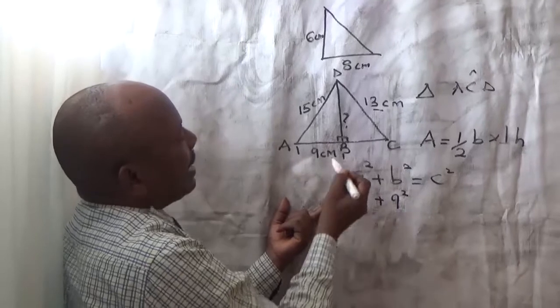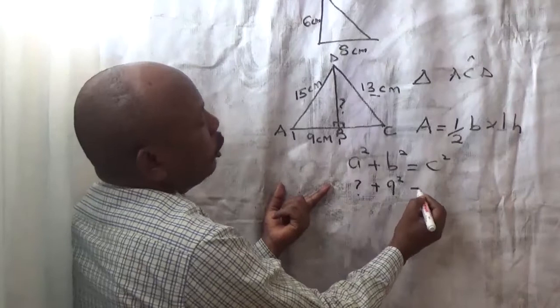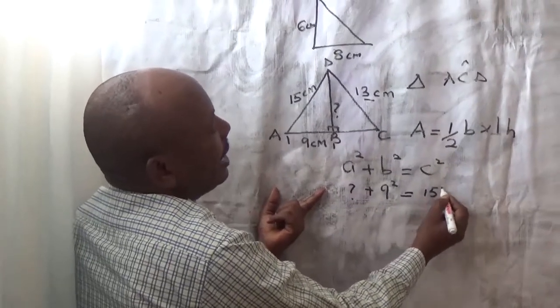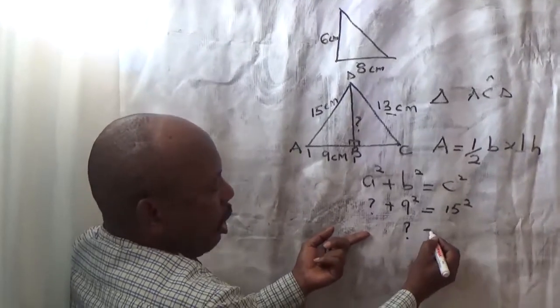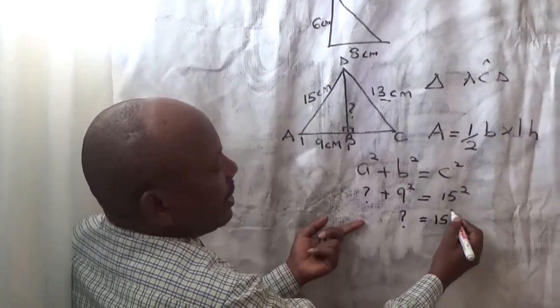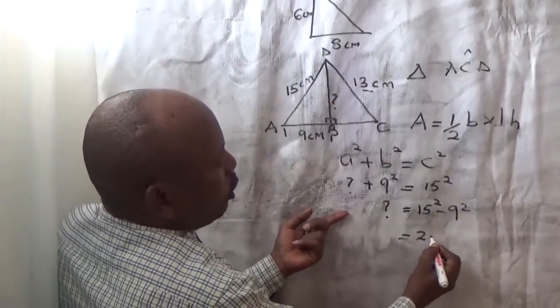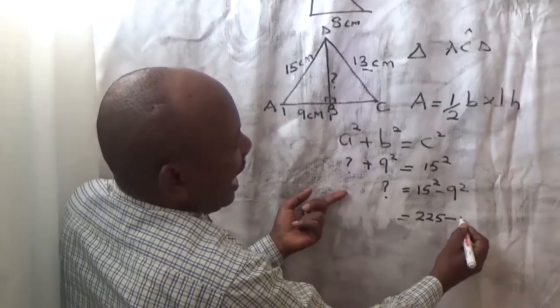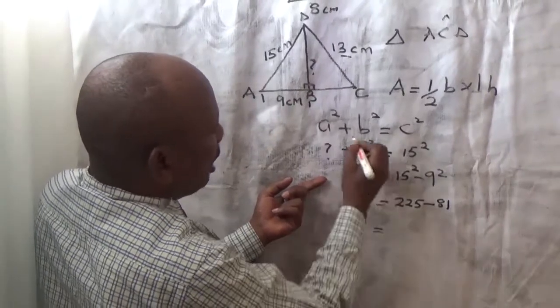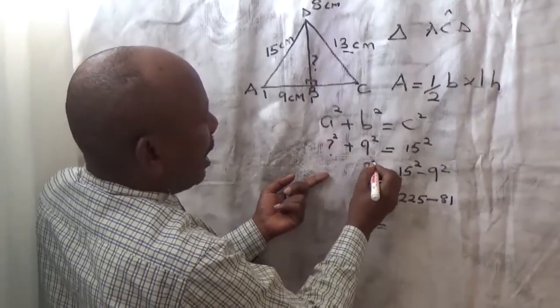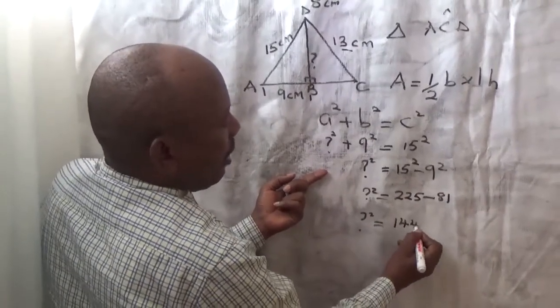So, 9 squared plus DB, which is our adjacent, we are not given, should equal to 15 squared. Our algebra dictates here, our unknown there, shall be 15 squared minus 9 squared. This goes to 225 less 81. So, our unknown there is equal to 144.